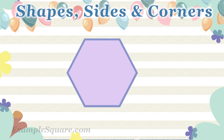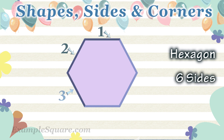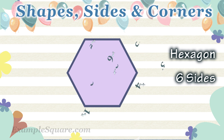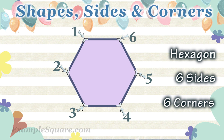What shape is that? Hexagon. How many sides does the hexagon have? A hexagon has six sides: one, two, three, four, five, six. How many corners does a hexagon have? A hexagon has six corners: one, two, three, four, five, six.